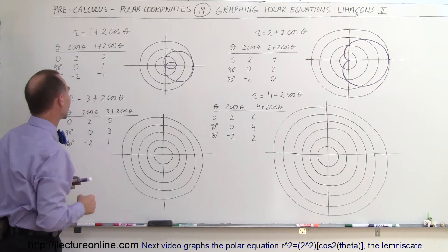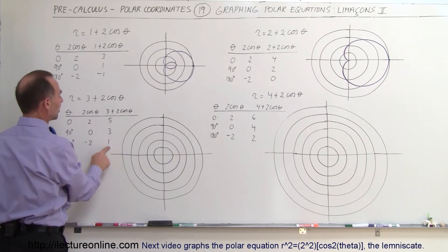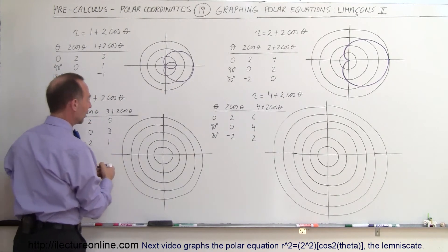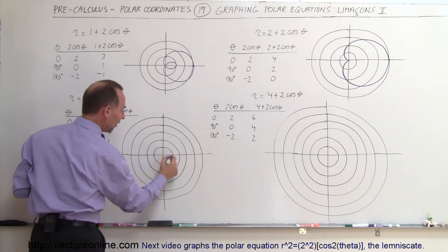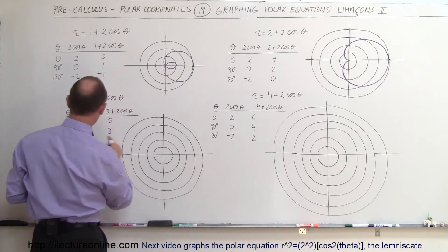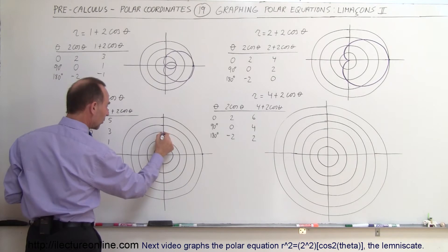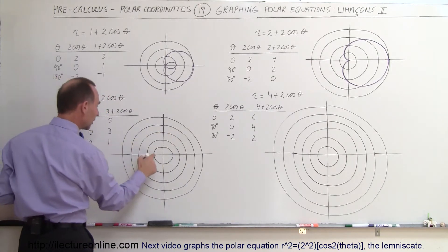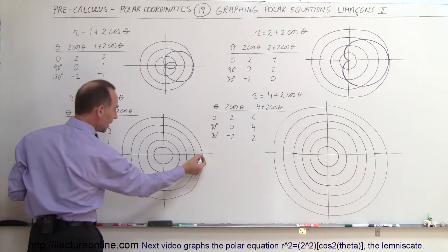Now when we have 3 plus 2 times the cosine of theta, notice that the smallest value you get is 1, which means that here you start at a value of 5 at 0 degrees. At 90 degrees you're down to 3, at 180 degrees you're down to 1. So it does come in.